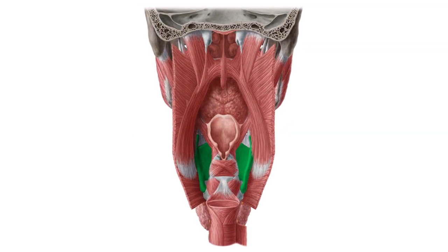The larynx is the most superior part of the respiratory tract and the voice box of the human body. It surrounds and protects the vocal cords, as well as the entrance to the trachea, preventing food particles or fluids from entering the lungs. The cartilages of the larynx make up its skeleton.